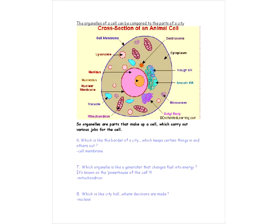Okay, so what do we have here? We have the cross-section of an animal cell. Now the organelles of a cell can be compared to the parts of a city. So remember the organelles are the different parts of the cell, each carrying out different jobs. They're kind of like the organs of a body. And that's why they're called organelles. Alright, so which one of them is like the border of a city which keeps certain things in and certain things out of the cell? Well that would be the cell membrane. Which organelle is like the generator that changes fuel into energy, or uses up the fuel to produce energy, or is also known as the powerhouse of the cell? That's the mitochondrion. And next question, which part of the cell is like city hall where decisions are made? That's the nucleus which of course is usually found around the center of the cell.